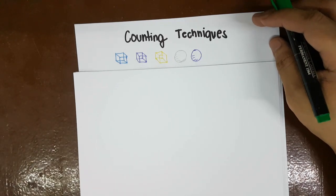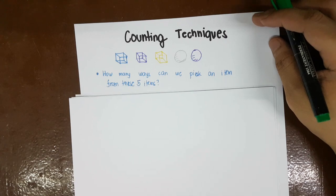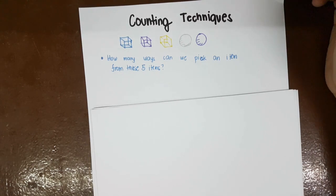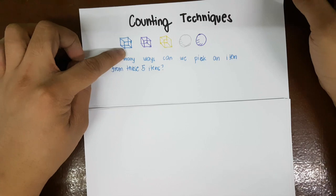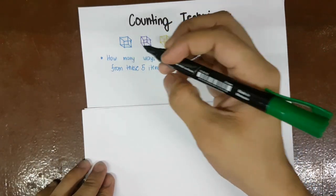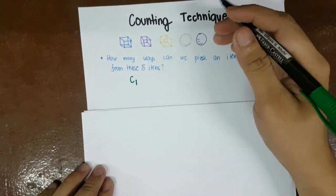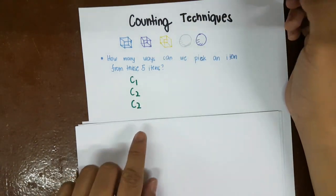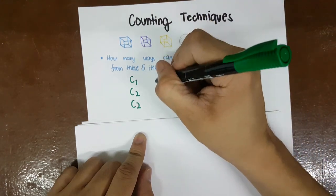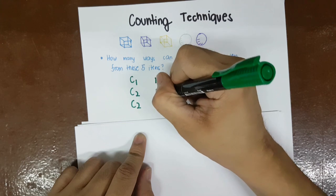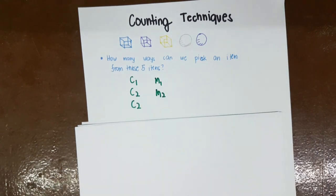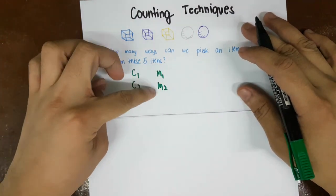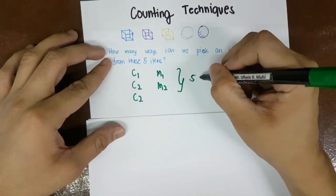The first question is: how many ways can we pick an item from these five items? It can be the first cube, or the second cube, or the third cube, or marble one, or marble two. So there are five ways to pick from these items.